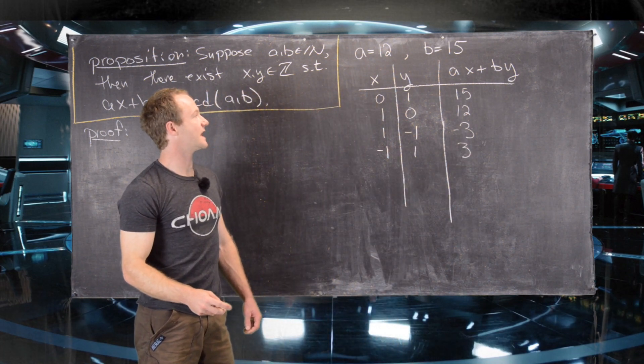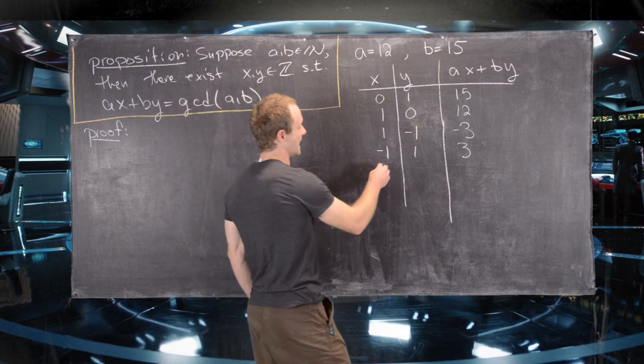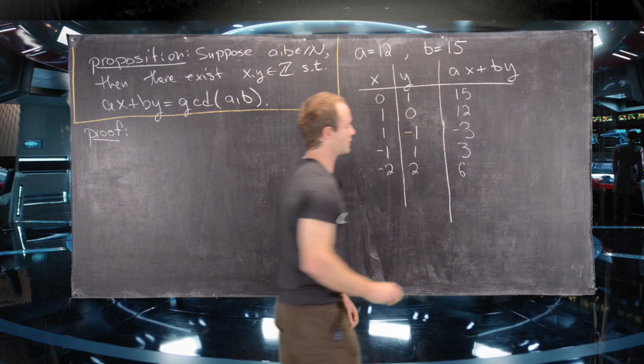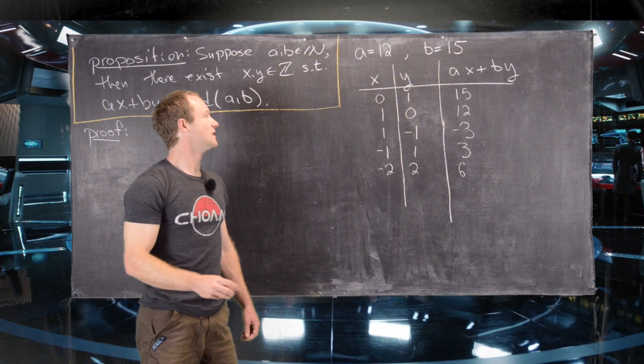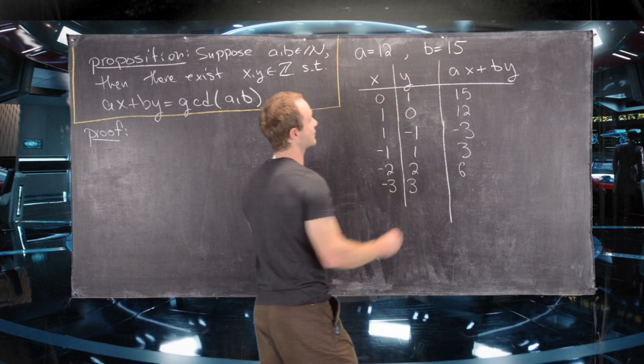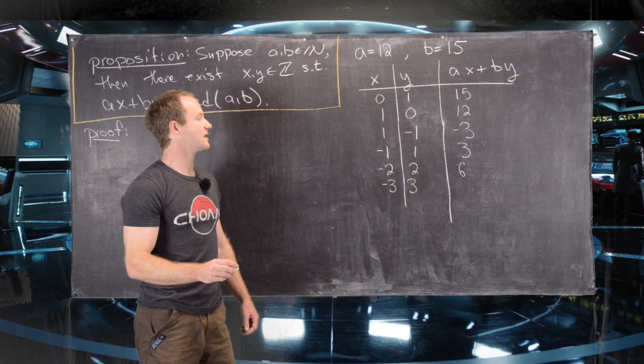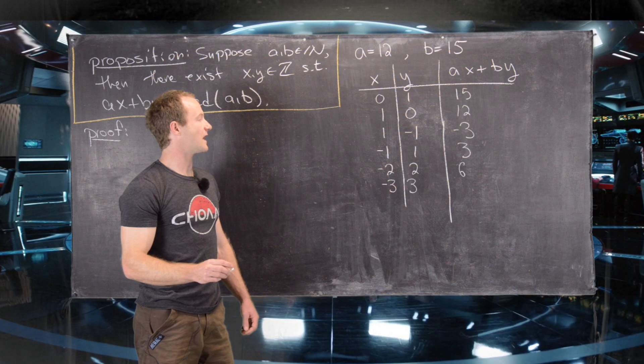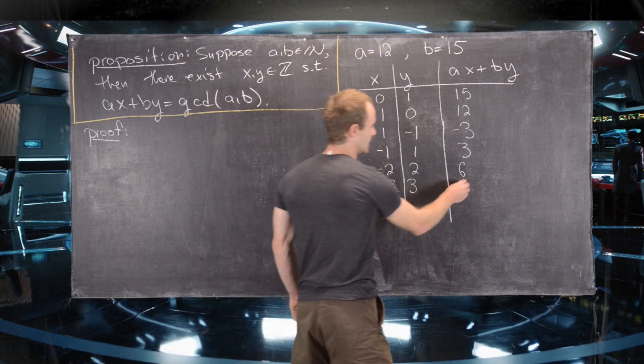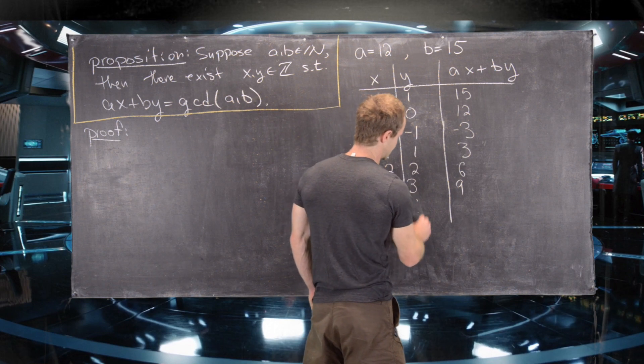Notice if we take negative 2, 2, that will give us 30 minus 24, which is 6. Notice if we take negative 3 and 3, that'll give us 45 minus 36, which is 9. And so on and so forth.